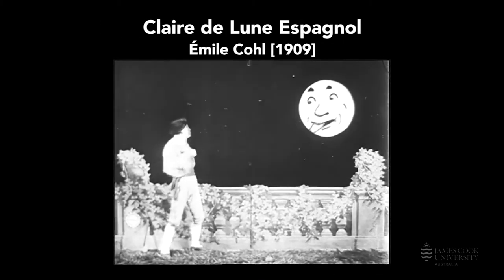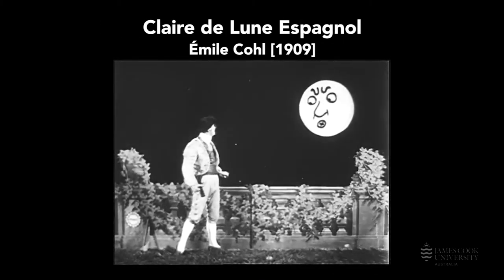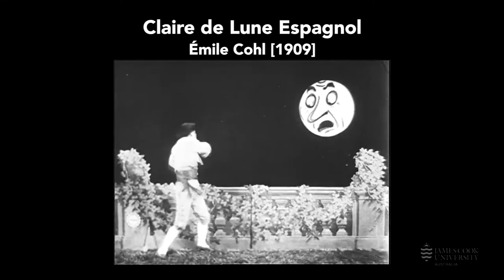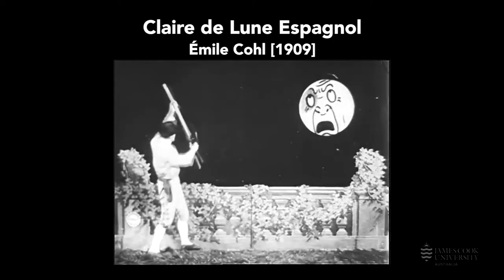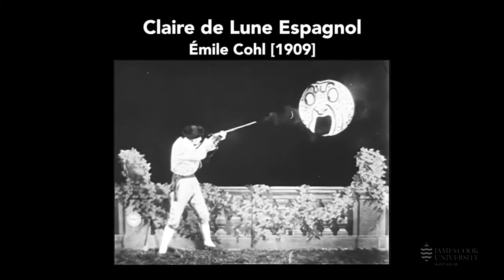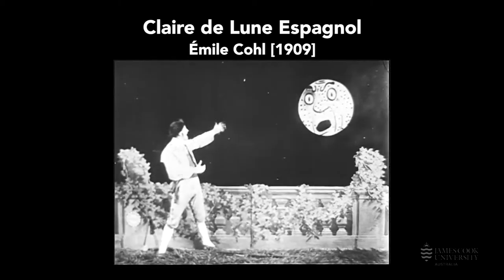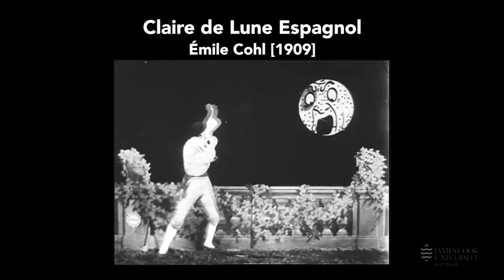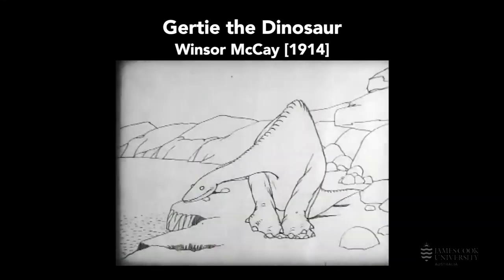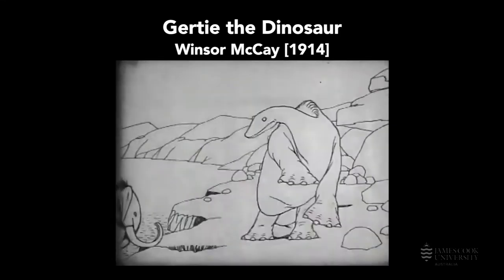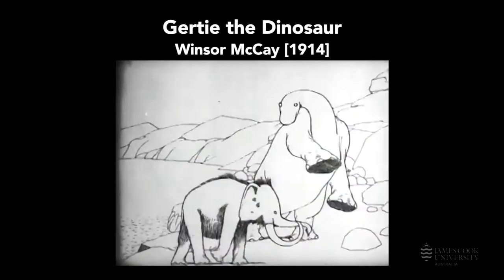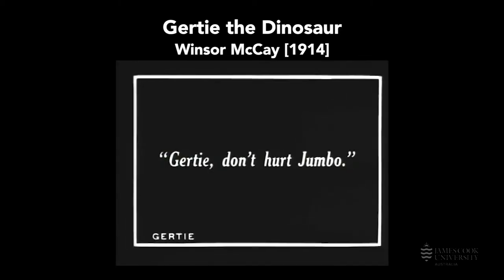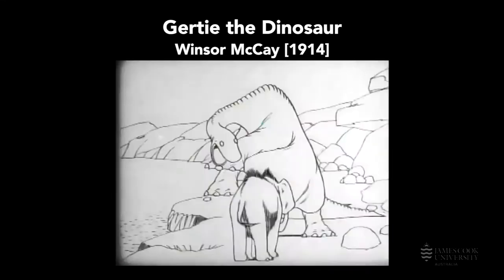Around 1908, Emile Cohl began experimenting by incorporating live-action footage with hand-drawn animated elements, as seen here in 1909's Clair de Lune Espagnol. In 1910, Earl Hurd invented the process of cell animation, which involved the use of translucent sheets of celluloid often overlaid on top of a fixed painted background. One of the earliest surviving examples of cell animation is Gertie the Dinosaur from 1914.